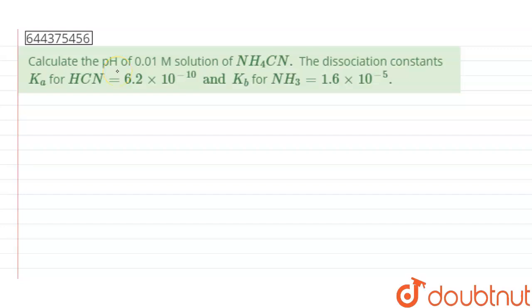Hello guys, the given question says: calculate the pH of 0.01 molar solution of NH4CN.